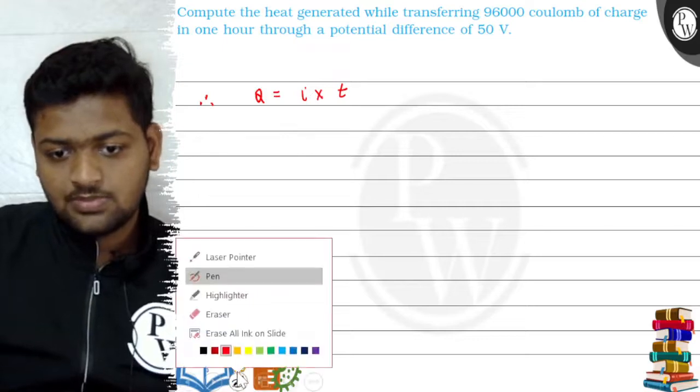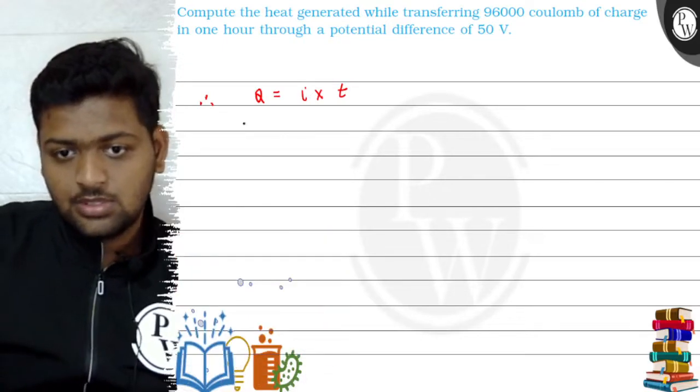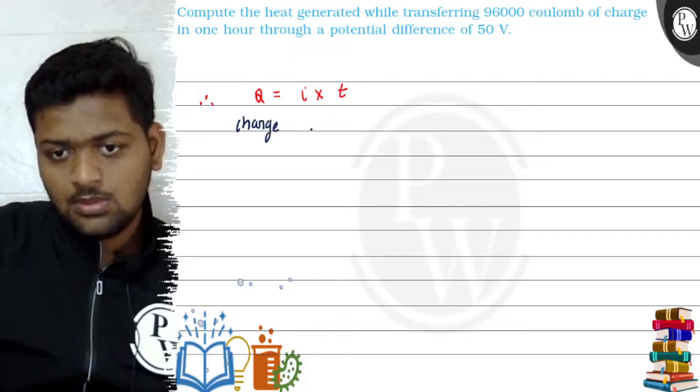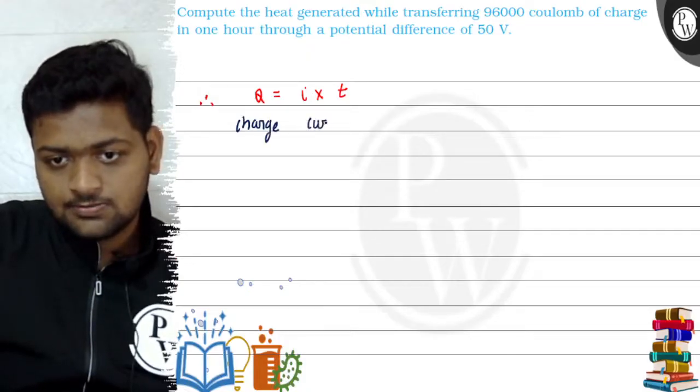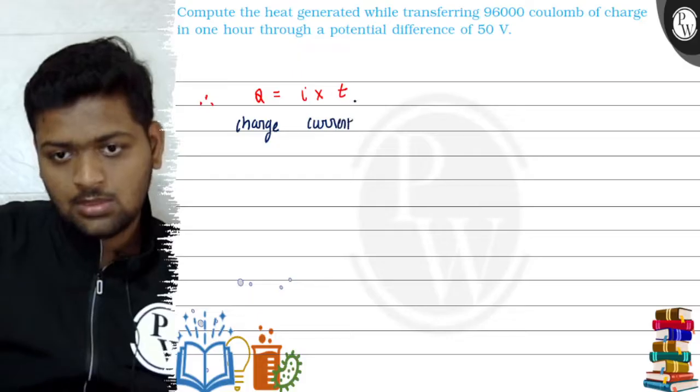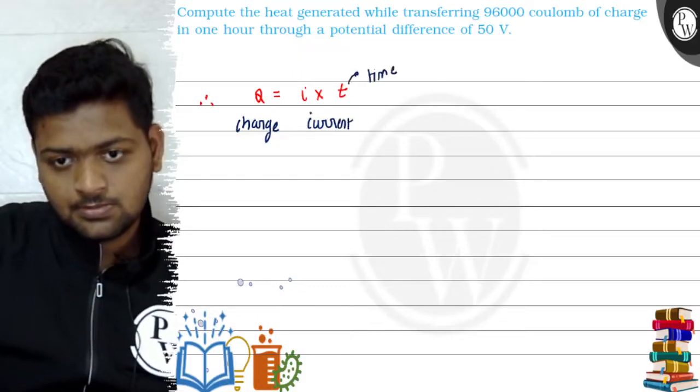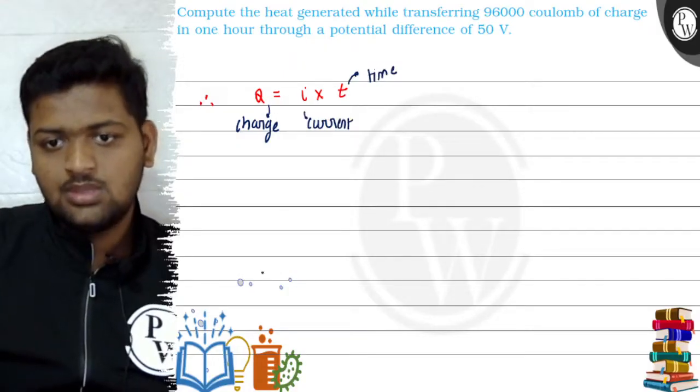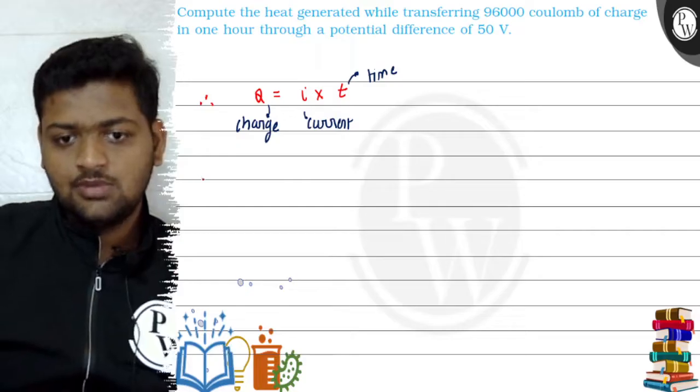Now, where Q is charge, I is current and T is time. Now, we will apply this formula where charge given is 96,000.